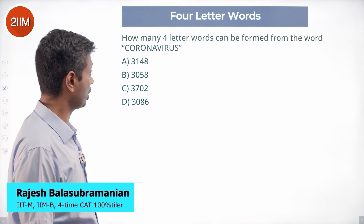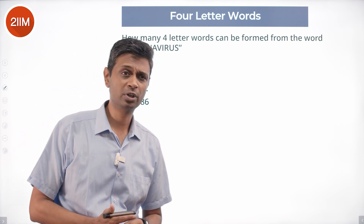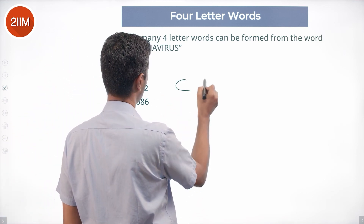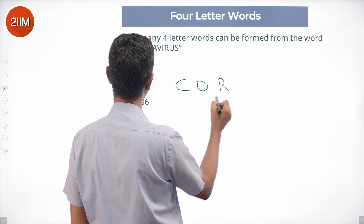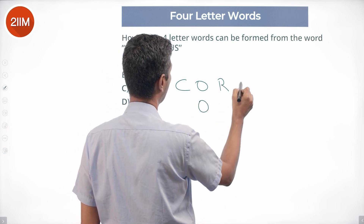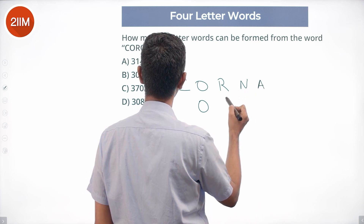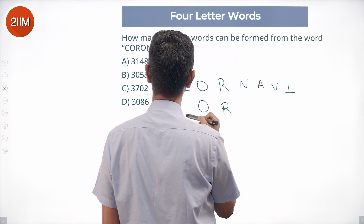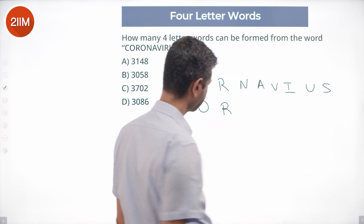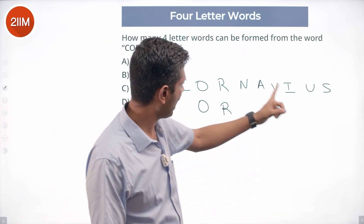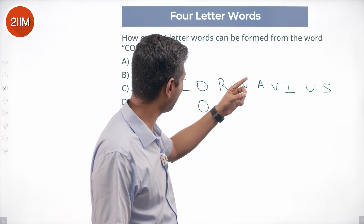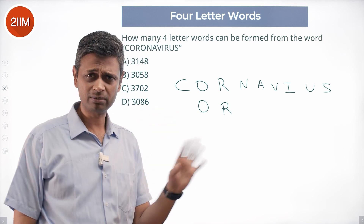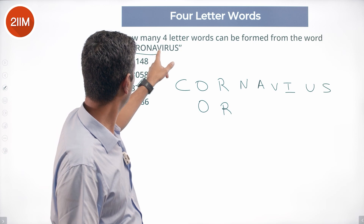How many four-letter words can be formed from the word 'coronavirus'? First, let's check for repetitions. The letters are: C, O, R, O, N, A, V, I, R, U, S. We have two O's and two R's. There are four different vowels — O, A, I, U — and five consonants — C, R, N, V, S — all different.